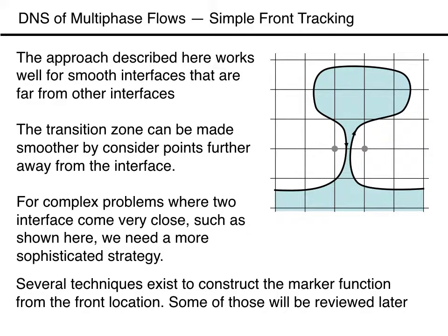Consider the thin neck in the figure. If we looped over the interface points and set the marker function on one side of the front to one value and to a different value on the other side, we would find that the marker function at the grid point to the left would have one value when we move up the front, and a different value when we come down the front on the other side. This is not an issue for the single drop we are working with here, so our simple approach works fine, but it is something to be aware of for more complex problems. A couple of techniques to deal with this issue will be reviewed later. It is also beneficial in some cases to use a smoother transition between the fluids.